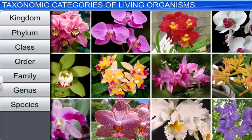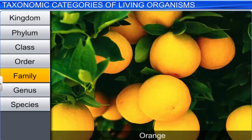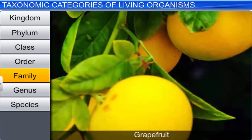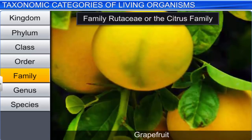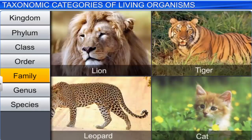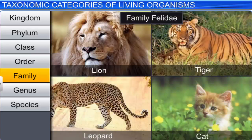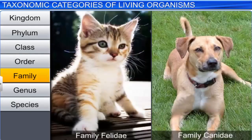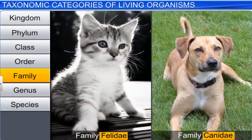The next rank or category is family, which consists of a group of related genera with fewer similarities as compared to genus and species. For example, orange, lemon, and grapefruit belong to the family Rutaceae, or the citrus family. Likewise, the lion, the tiger, the leopard, and the cat fall into the family Felidae. Although a cat and a dog exhibit some similarities and some differences, they are separated into two different families, Felidae and Canidae, respectively.